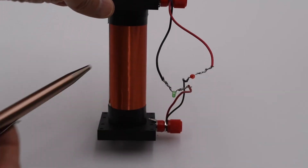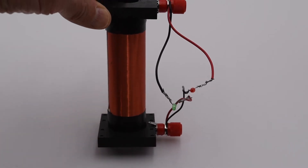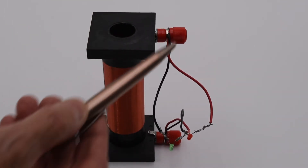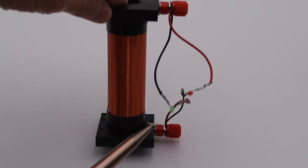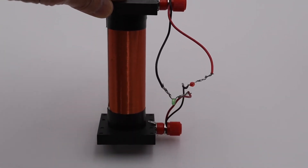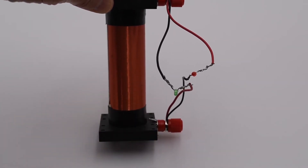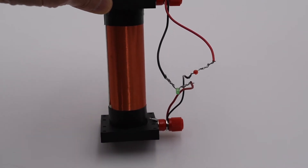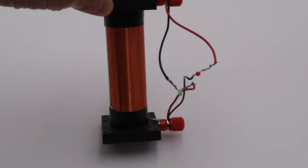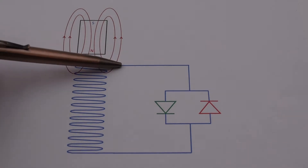I have a coil that has 265 turns per centimeter, and across the coil I've attached two light emitting diodes — a green one and a red one. They are connected such that if the green LED is forward biased, the red LED would be reverse biased. Here is a schematic of our setup: we have our coil and attached to the ends of the coil are our two LEDs.